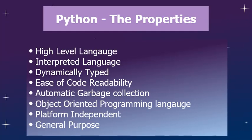Now let's understand the properties of Python. I have listed eight properties of Python and we will understand them point by point. First is that it's a high-level language. When you write code in Python, your computer cannot understand it directly. Any code written in such a language which your computer cannot understand directly is a high-level language. So similarly, Python is a high-level language.